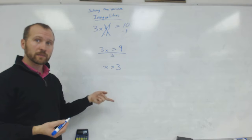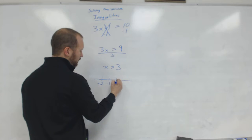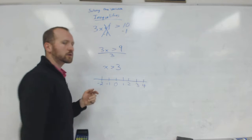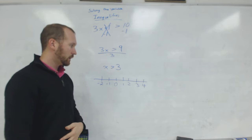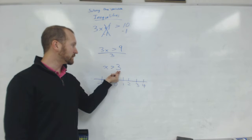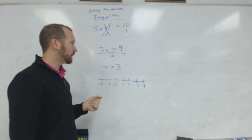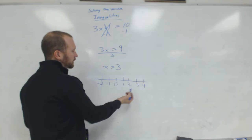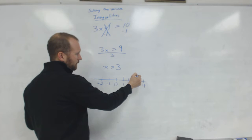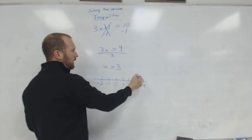Then we're not done — we make a graph to show this. On the number line, since X is greater than 3, we're going to use a hollow dot because it's not equal to, and the arrow goes up to the right because it's greater than. The number lines on your homework will already be there, which is kind of a hint — if you get an answer that's not on the number line, you made a mistake.